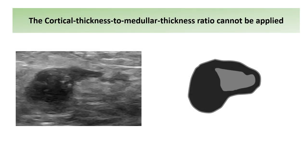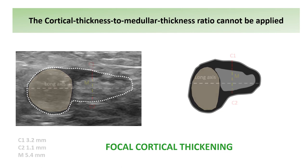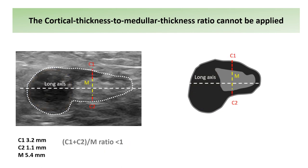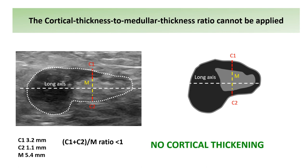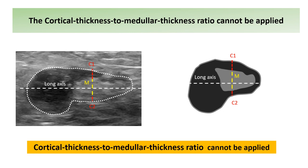In cases where the cortical thickness to medullar thickness ratio does not involve the maximum cortical thickening, the ratio cannot be applied. For instance, in a lymph node with clear focal thickening, the cortical thickness to medullar thickness ratio may be less than 1, making us consider the lymph node as non-thickened — so here the ratio cannot be applied.